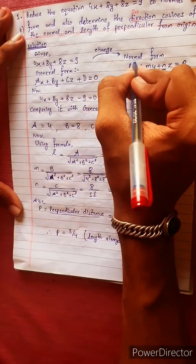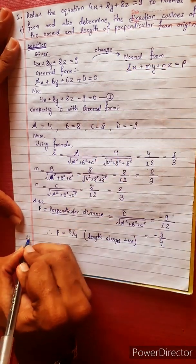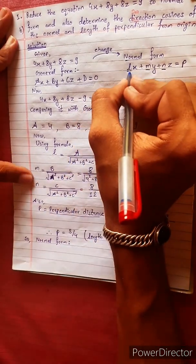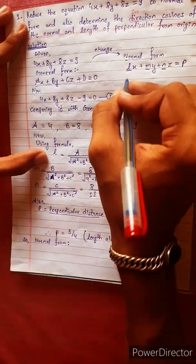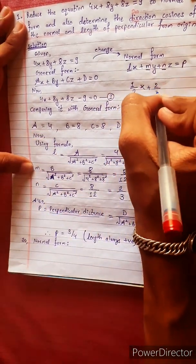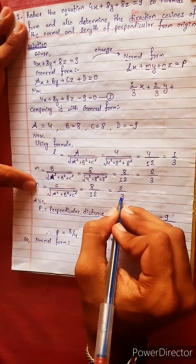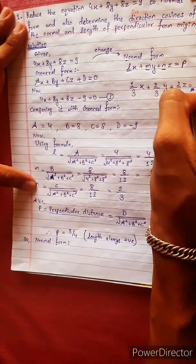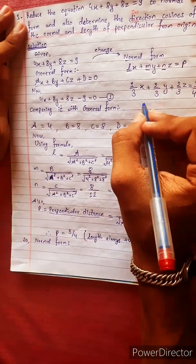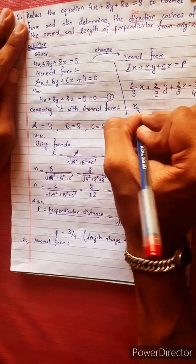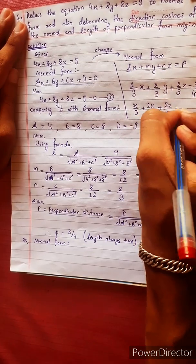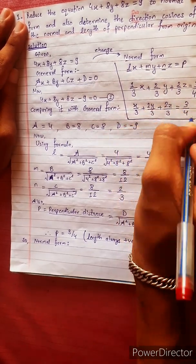So the normal form is: (1/3)x + (2/3)y + (2/3)z = 3/4. This can be written as x/3 + 2y/3 + 2z/3 = 3/4. This is our normal form.